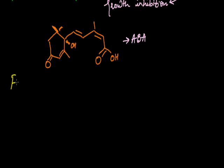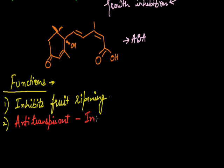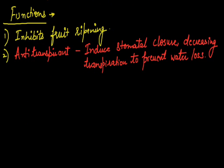Now we will discuss some of the functions of abscisic acid. First, as it is an inhibitory hormone, it inhibits fruit ripening. Next function is it acts as anti-transpirant. That is, it induces stomatal closure, which in turn decreases the rate of transpiration to prevent water loss. So that water vapor cannot be escaped from the leaves and the wilting can be inhibited.